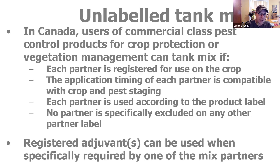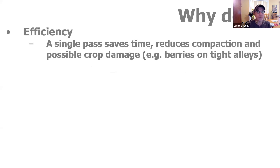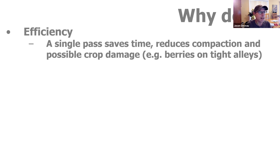At least in Canada, if you want to use an adjuvant, one of the labels has to call for it before you're allowed to put it in. So why would you risk making this witch's brew? Efficiency. Doesn't it save time to pass over the field or through the orchard or through the vineyard once instead of half a dozen times? Not only do you save time and money, but you avoid things like crop damage. For people who spray a sensitive crop like highbush blueberry, a lot of guys don't like to spray multiple times because physically bumping into the plants destroys the berries. Another reason is compaction — every time you drive a sprayer through, you've got ruts you're going to have to deal with for the whole season. It's not good for soil health, not good for roots.